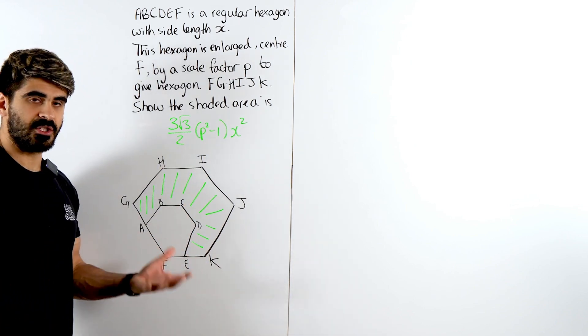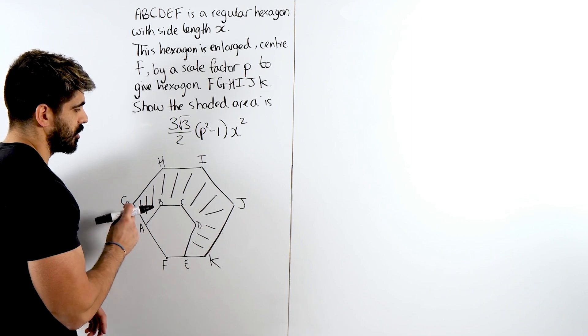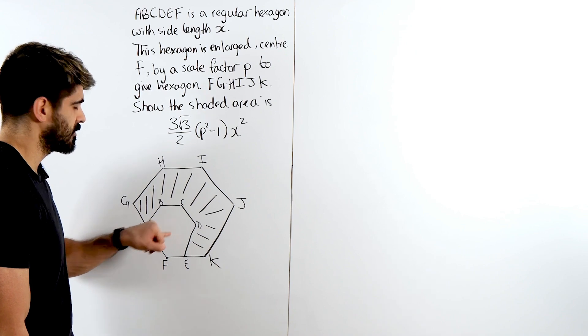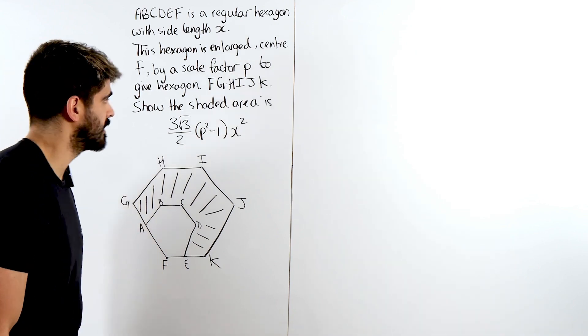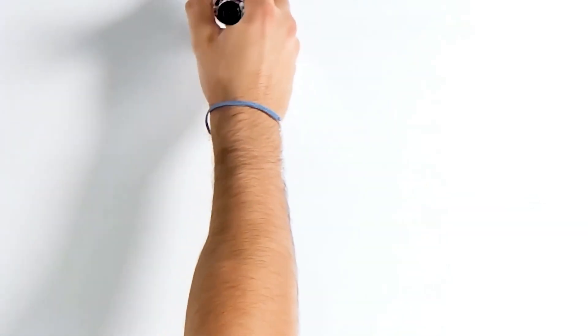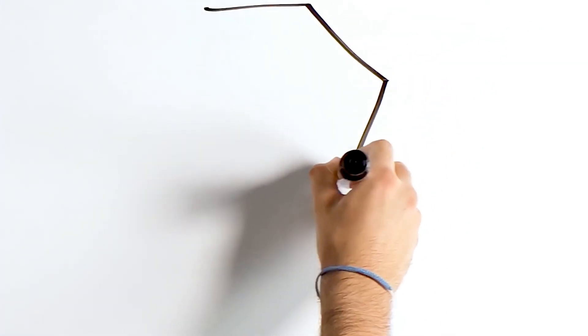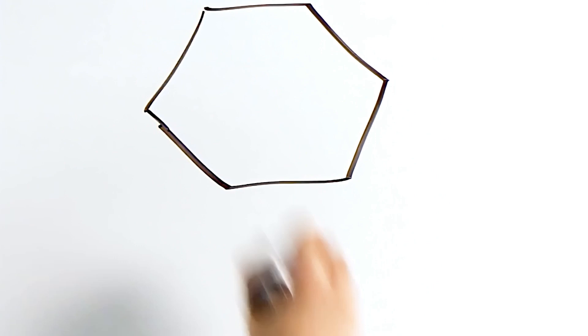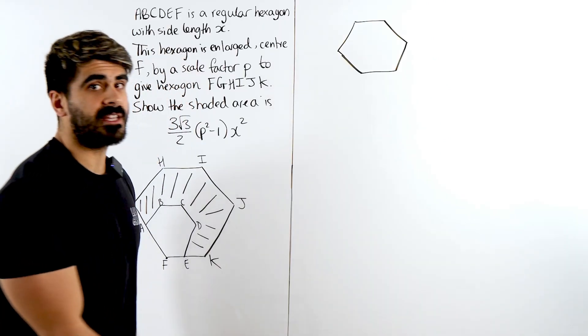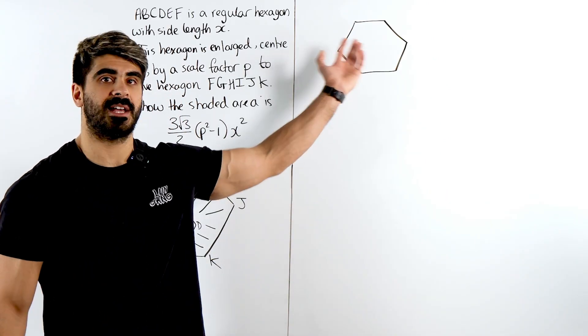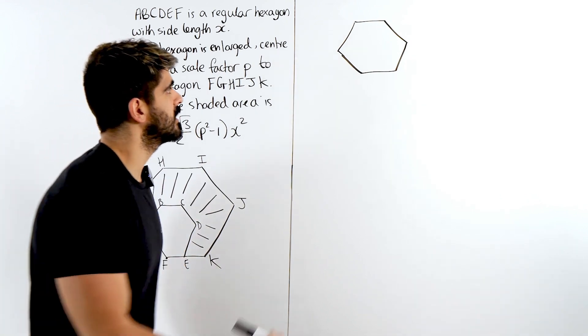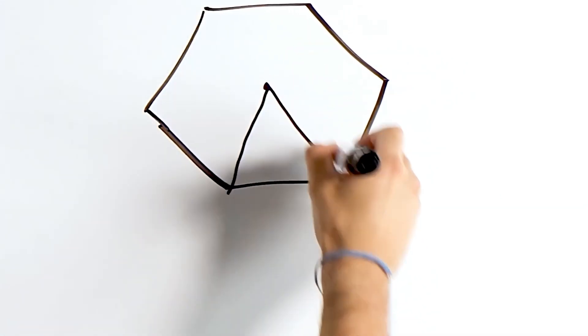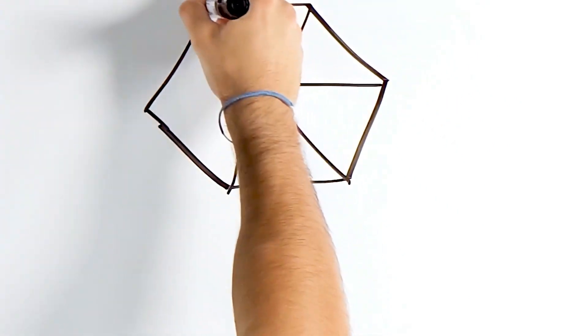Well, obviously the way to do this is we're going to do the big hexagon minus the small hexagon. So let's do that. I'm just going to draw them separately. Let's take the smaller one and let's explore how we work out the area of a hexagon. Now because it's regular, all the side lengths are X.